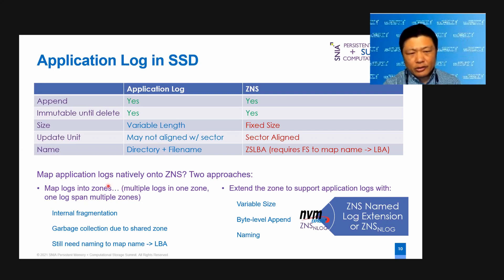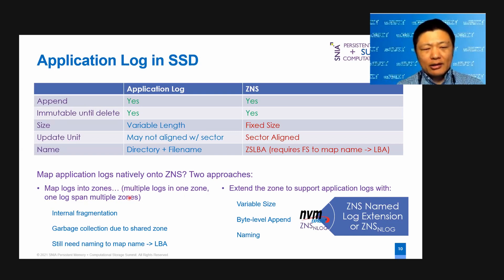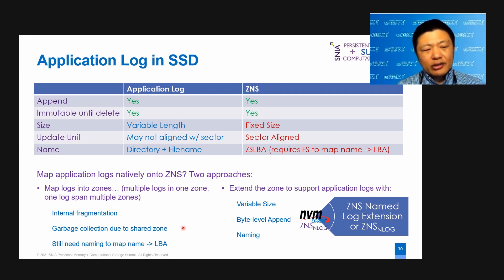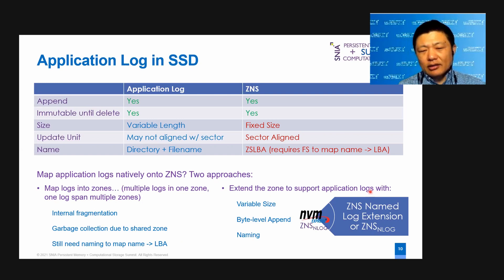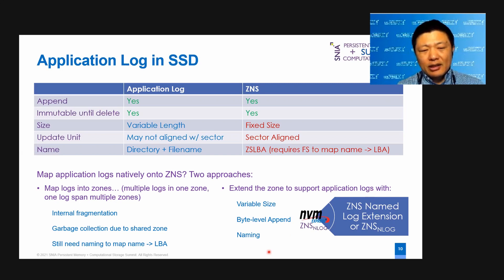We can map logs into zones — for example, many logs into one zone, or one log spanning multiple zones. The downside of this approach is: first, we have internal fragmentation; second, due to shared zones, we have to introduce garbage collection; third, we still need a naming service to map a name to an LBA. Another approach is to extend the zone to support application logs with the following extensions: first, variable size zones; second, byte-level append; third, naming services. We call this ZNS Named Log extension, or ZNSNLog for short.